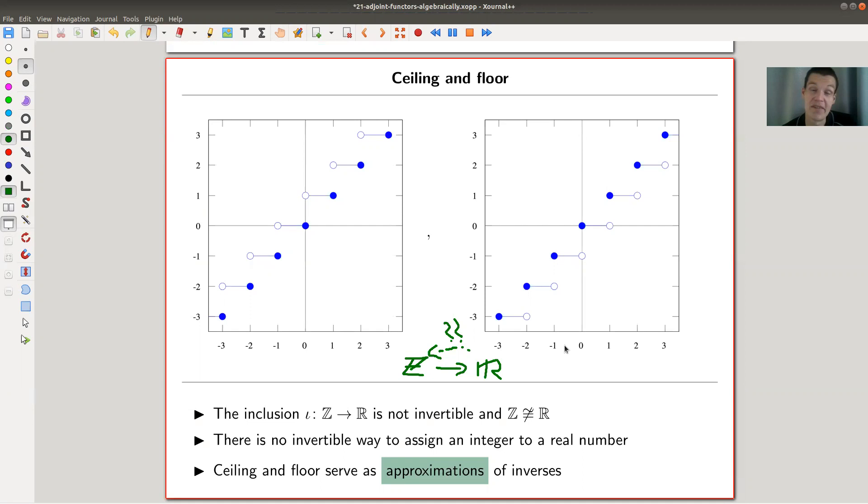You need to collapse something, right, you need to somehow get rid of a certain number of objects in the end, because it's not invertible. There's no really any nice invertible way to go from one way to the other.